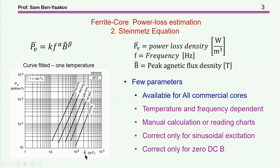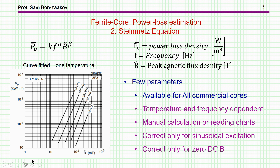Here we see the peak value of the magnetic flux density in milli-tesla, and we have the power per volume — kilowatts per meter cubed, or milliwatts per centimeter cubed — which is the power consumed, the power density in a core of this type at 100 degrees centigrade, given for different frequencies. The reason why these are straight lines is because this is a power equation on a log-log chart, so a power equation will exhibit itself as a straight line.